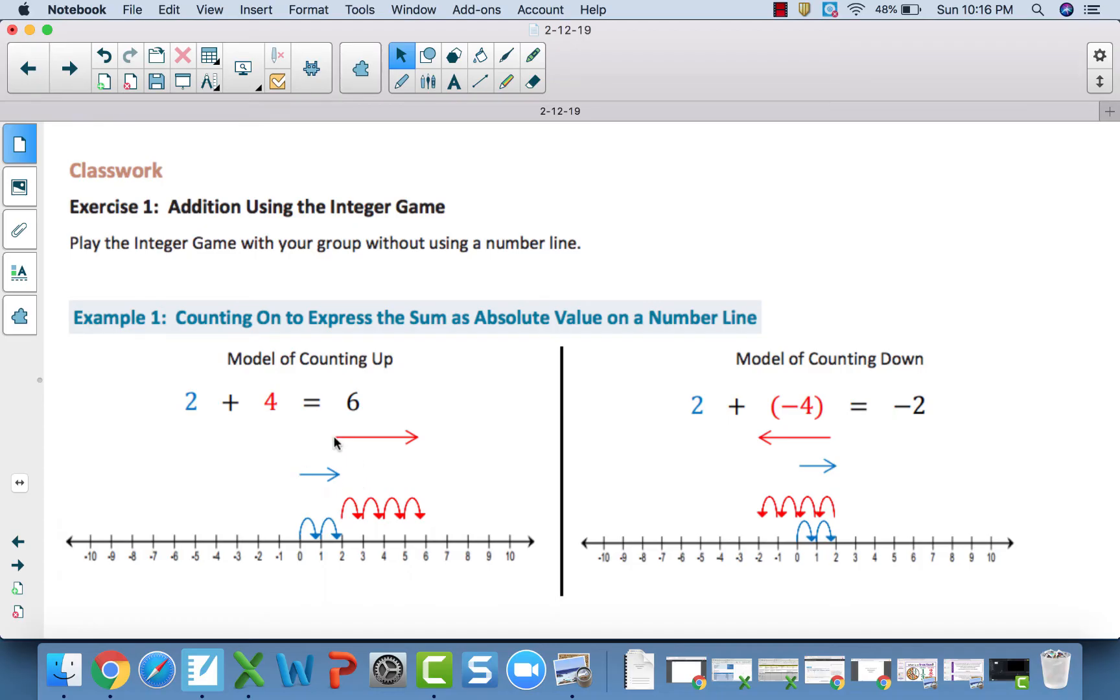So we started drawing arrows, also known as vectors. And we learned that the absolute value of the numbers we are adding, or add-ins, told you how long the vector or the arrow needed to be. It's just the negative would point to the left, and the positive points to the right.